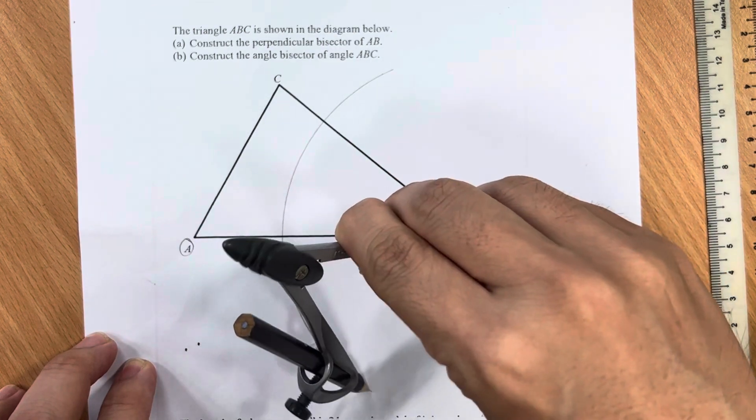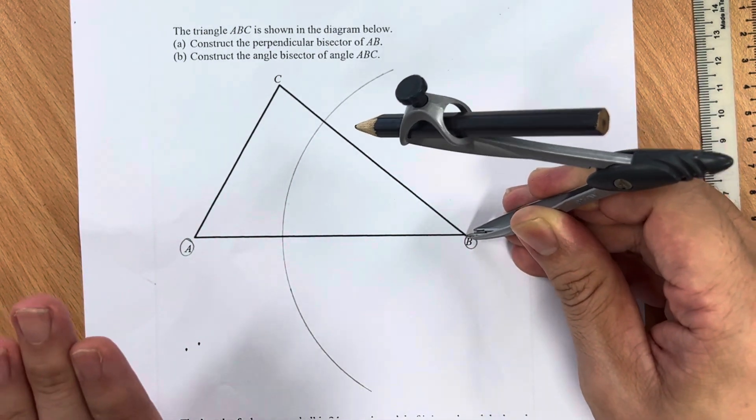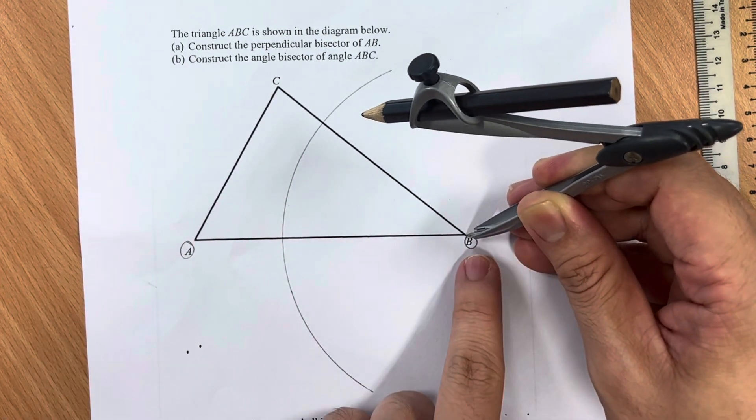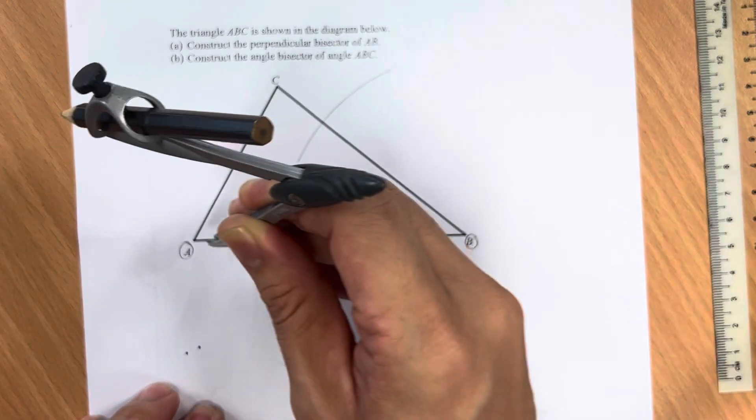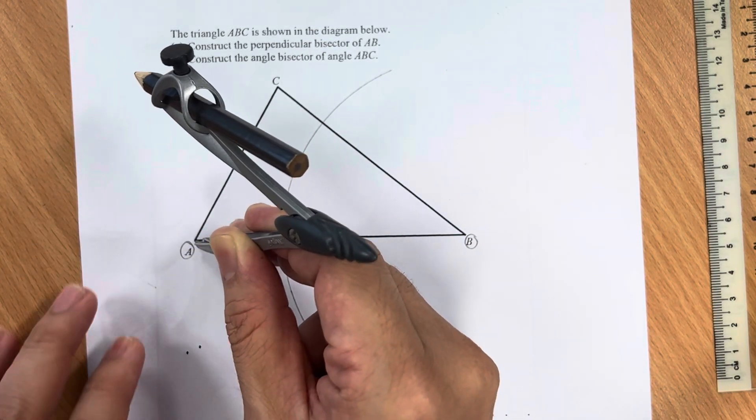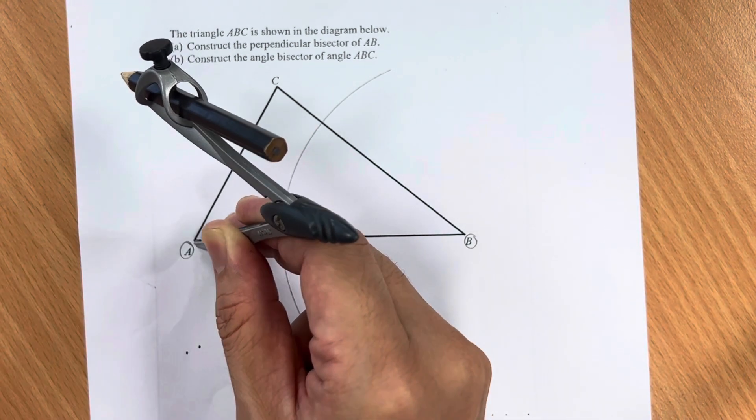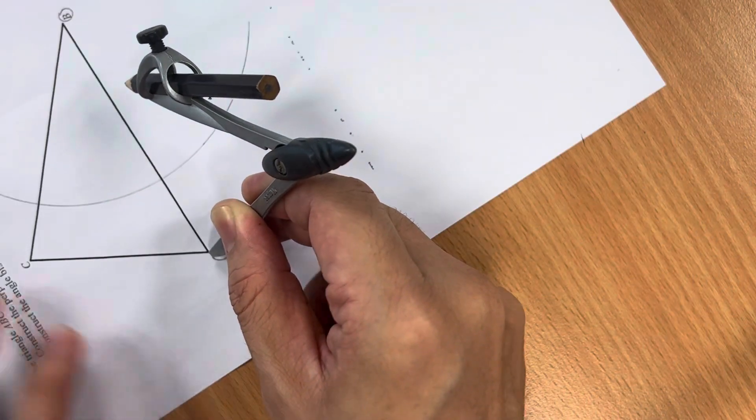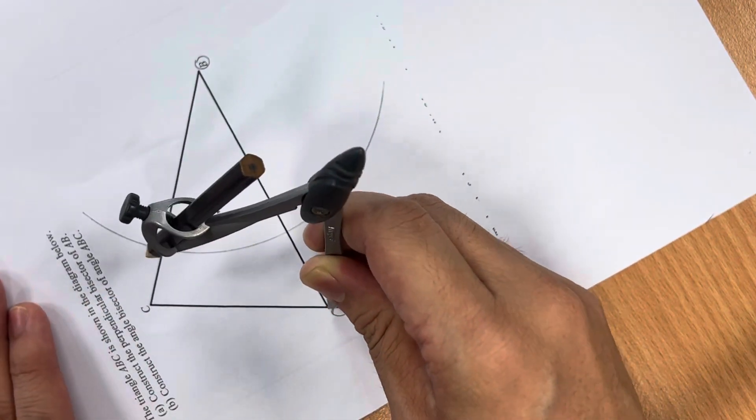Move the pointed tip to the other point. Now, like Mr. Tan here, I'm going to turn the paper so that it's easier for me to draw.